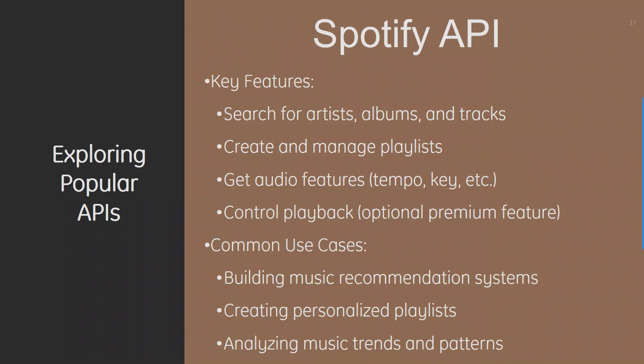For the Spotify API, key features include searching for artists, albums, and tracks, creating and managing playlists, getting audio features like tempo and key, and controlling playback as an optional premium feature. Common use cases include building music recommendation systems, creating personalized playlists, and analyzing music trends and patterns.